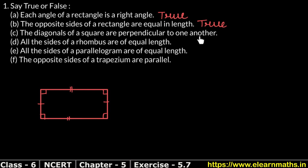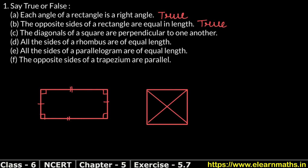Next: the diagonals of a square are perpendicular to one another. Let's look at our square and draw its diagonals. When the diagonals of a square cross each other, the angle formed is 90 degrees. So the diagonals are perpendicular to each other.